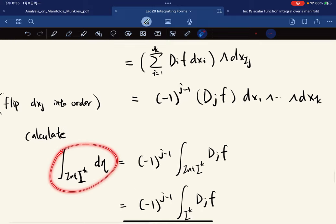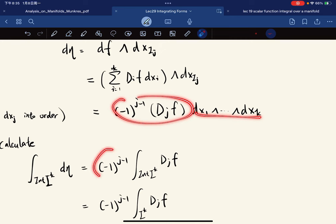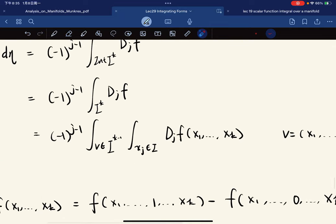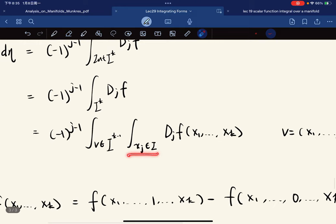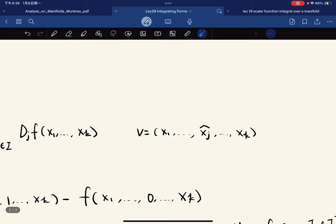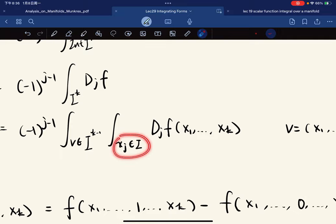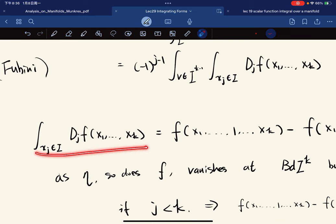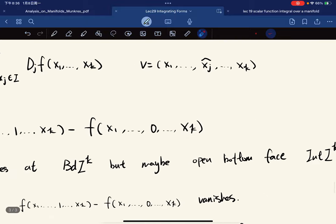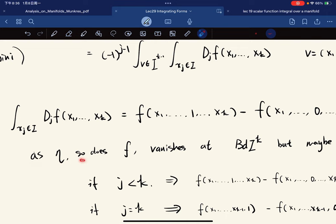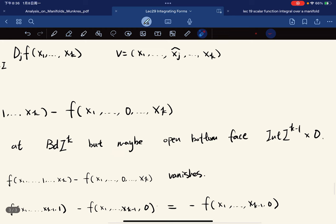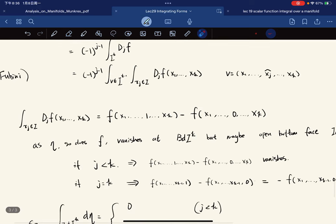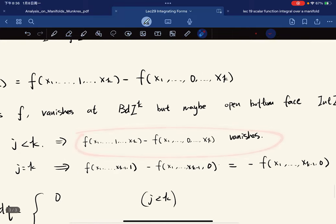Now we calculate this by definition: it equals the integral of this thing. This becomes this, and we use Fubini's theorem to just focus on the last coordinate x_j. So v equals this by Fubini's theorem—we just focus on the coordinate that we ignored. For this one ignored, we calculate it using fundamental calculus. Since η vanishes at the top but maybe not on the open bottom face, this is our given condition.